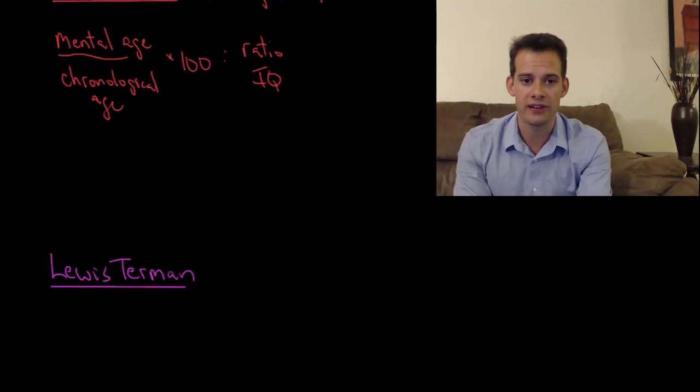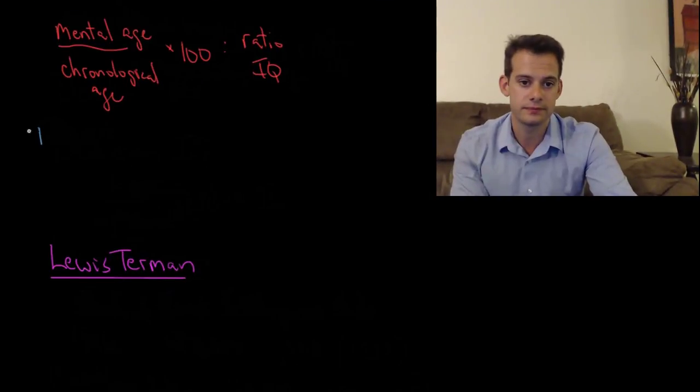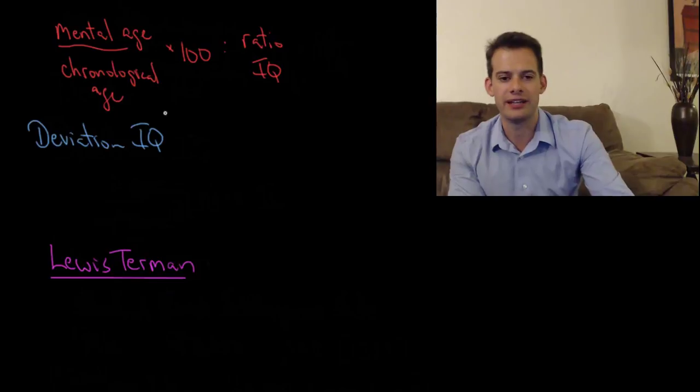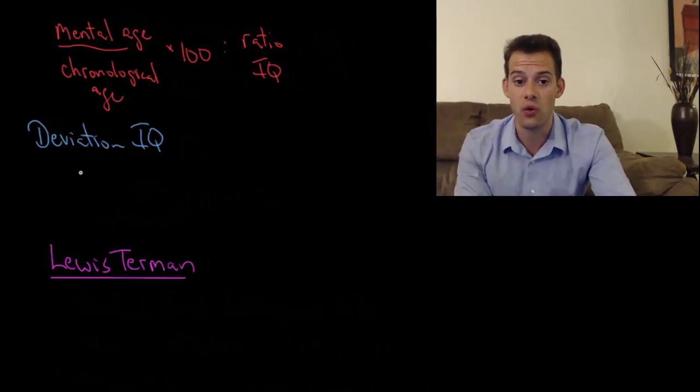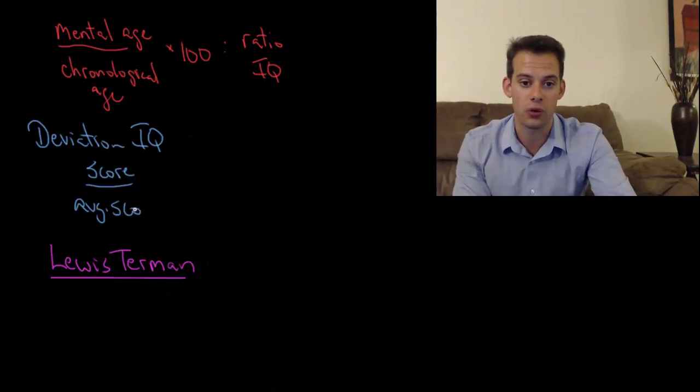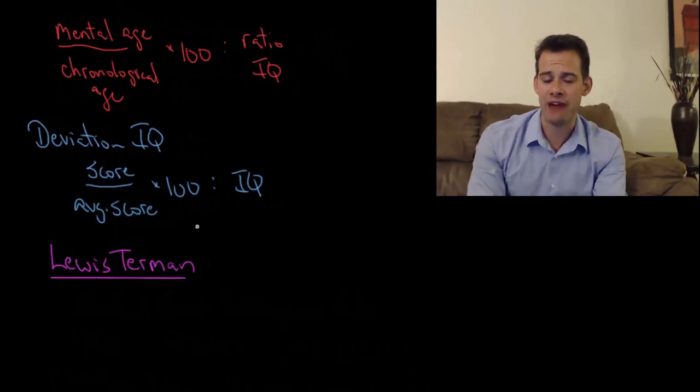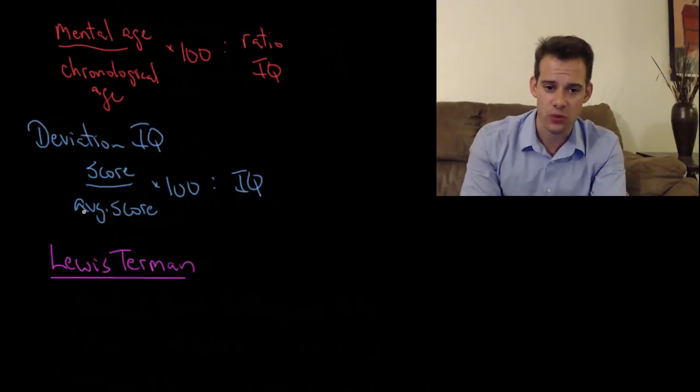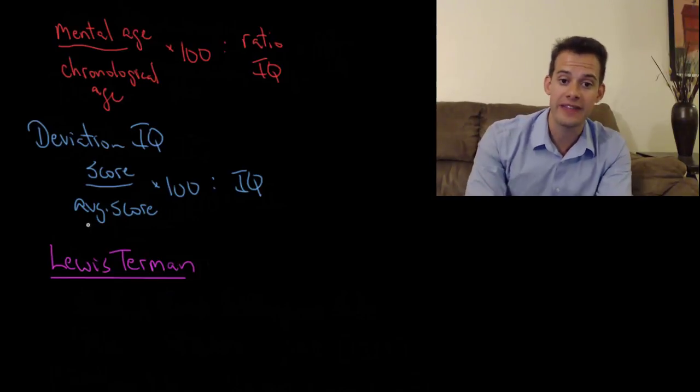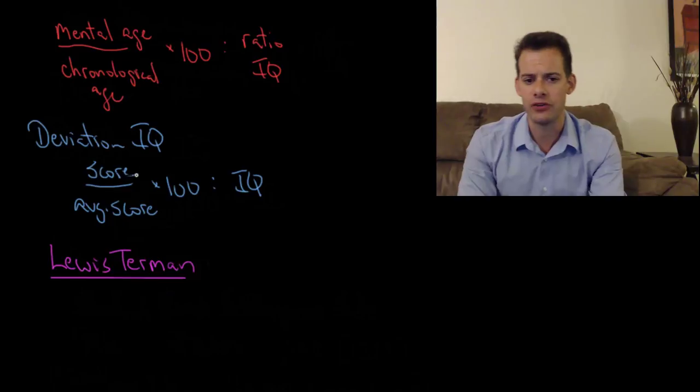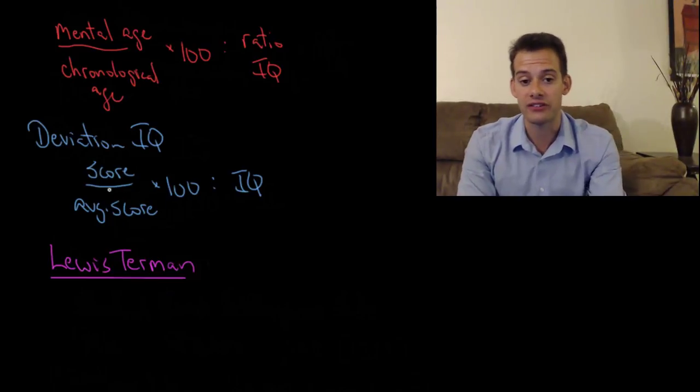So instead, researchers today use another technique called deviation IQ. The difference between a ratio IQ and a deviation IQ is what a deviation IQ does is it just compares your score to the average score for your age range. The average score for your group and then multiplies that by a hundred and that's how you get this deviation IQ. And again we can see the average IQ will still be a hundred. If you score just as well as the average for your group, then you'll have an IQ of a hundred. If you score above the average of your group, then your IQ will be above a hundred. And if you score below the average for your group, then your IQ score will be below a hundred.